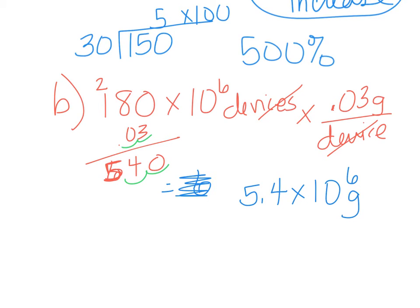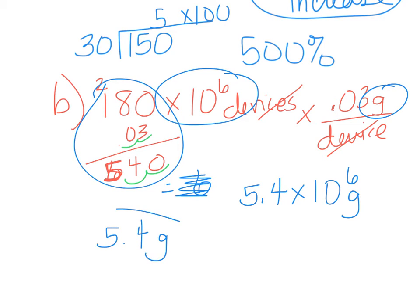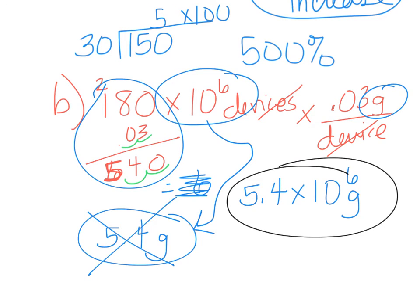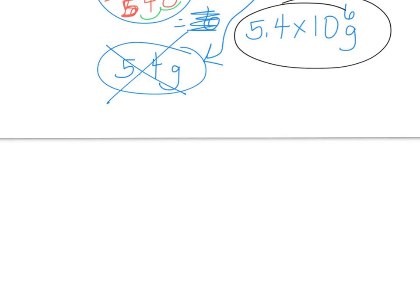Remember, devices canceled. Grams did not, so I need to put grams. Also, one big thing, don't forget 10 to the 6. A lot of times students are just focused on this math and then they just write 5.4 grams and they think they're done because they forgot to carry down the times 10 to the 6. This is not correct. The correct answer is 5.4 times 10 to the 6 grams.